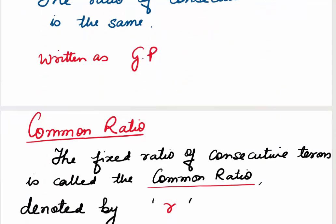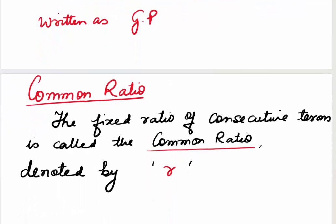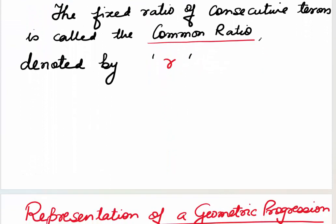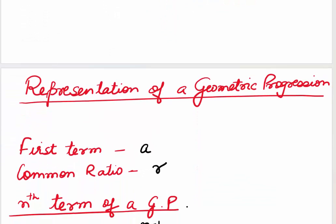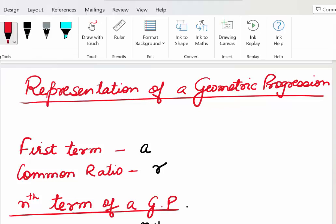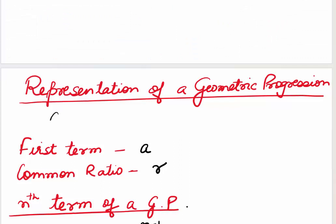This fixed ratio of two consecutive terms is called the common ratio, and it's denoted by the small letter r. Now, how do we represent a geometric progression? If we are given a first term a, then our progression is: a, ar, ar², ar^(n−1), and so on. Here, a is the first term and r is the common ratio.